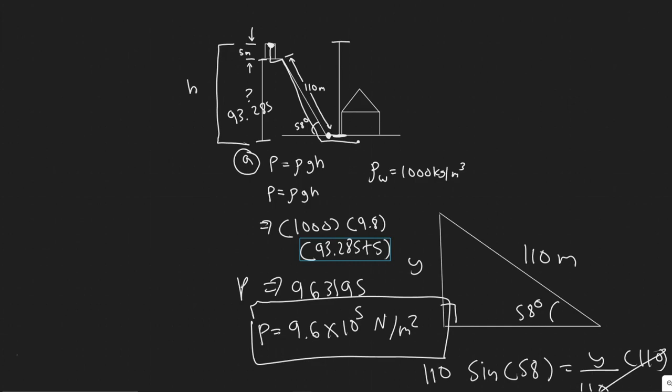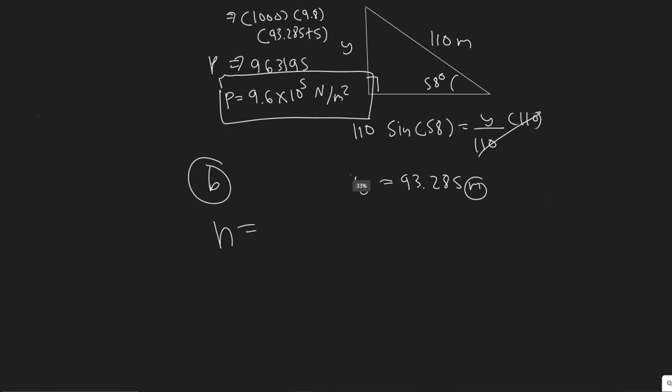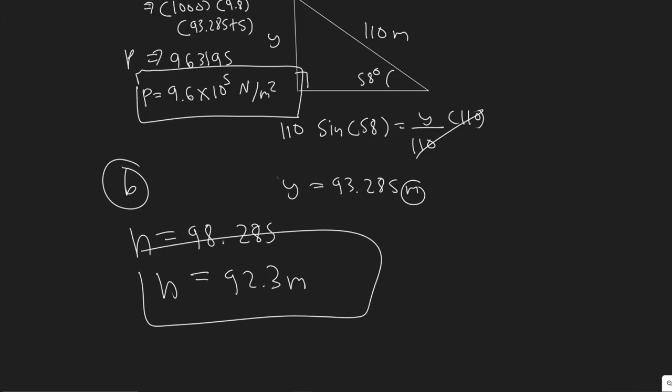So h in this case, or how high it'll go, is just this value right here. So 93.285, and then you would just add the five, or 93.285 plus the five, so you have to add them. And so when you do that, you would get 98.285. So about 98.3. You can round it however you'd like. Obviously, this is in meters, since we're dealing with height here. But yeah, so just know it's equal to the distance or the height from the free surface, whatever you used in your pressure formula, that's how high it'll go.